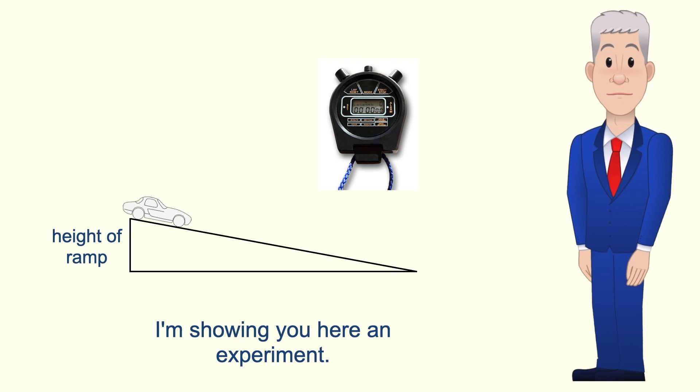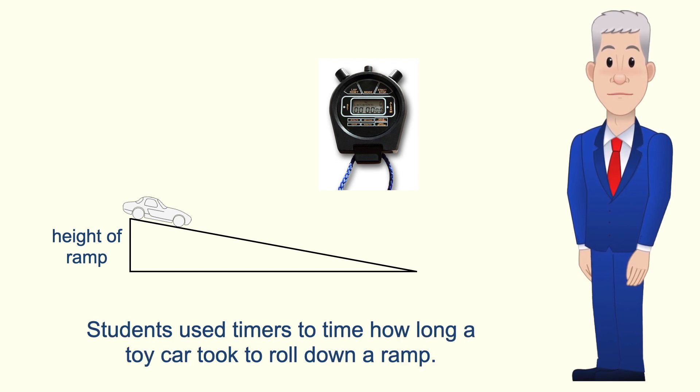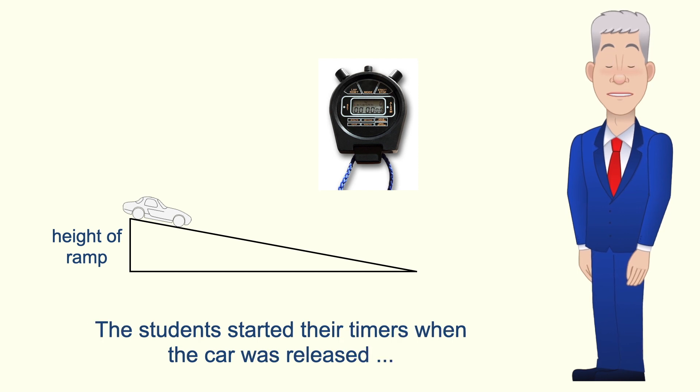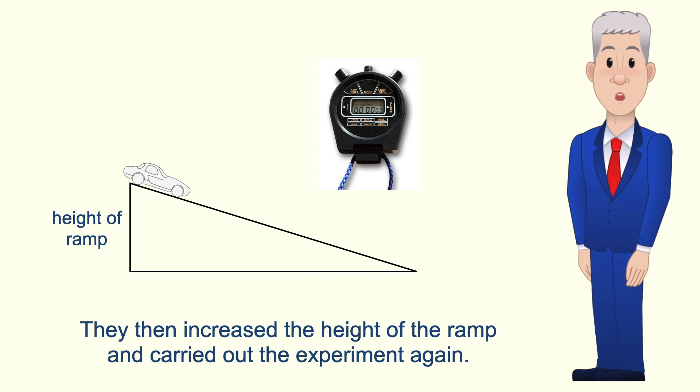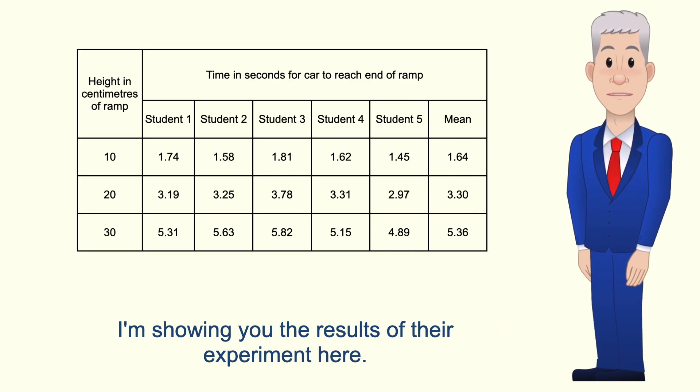I'm showing you here an experiment. Students used timers to time how long a toy car took to roll down a ramp. The students started their timers when the car was released and stopped their timers when the car reached the end of the ramp. They then increased the height of the ramp and carried out the experiment again. I'm showing you the results of the experiment here.